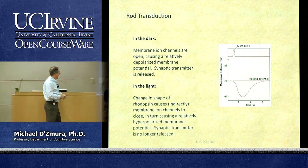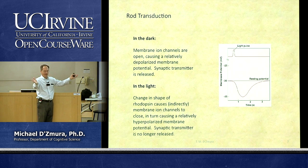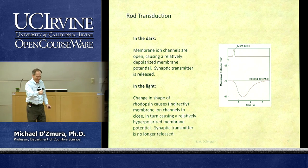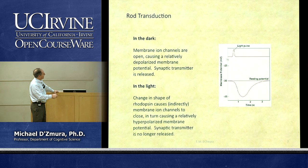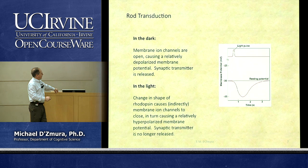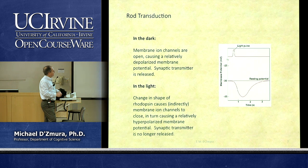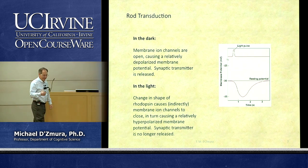It's a little backwards from what you might expect. You might say shining light on a rod will depolarize it and release transmitter — but in fact it's the opposite. When the rod is in the dark, it is depolarized and releasing transmitter. When we shine a light, it hyperpolarizes and stops signaling. A light pulse causes the membrane potential to decrease — hyperpolarize — and that hyperpolarization causes less neurotransmitter to be released.